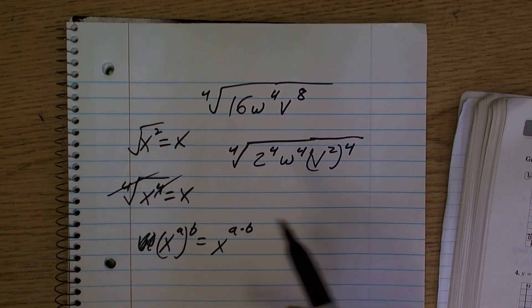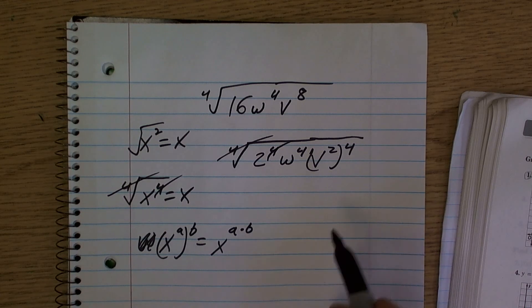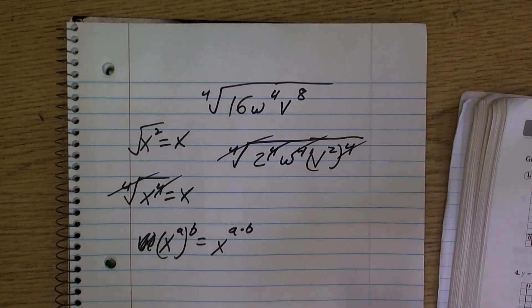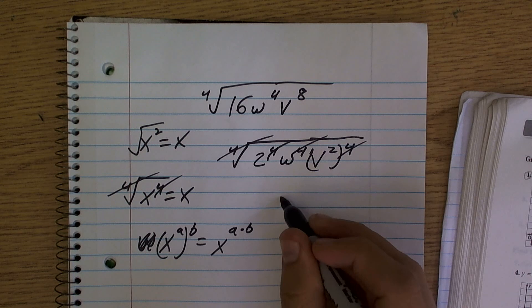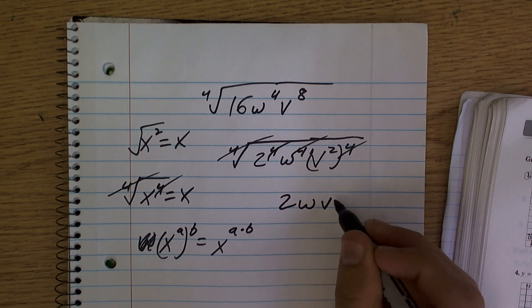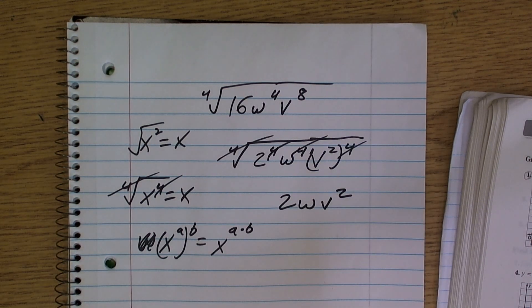So just like here, these cancel out to give us x. Those fours cancel out, that four cancels out, and that four cancels out, leaving us with the final answer of 2wv squared. Make sense? Yep. Okay, we're good.